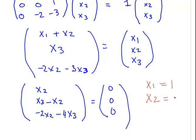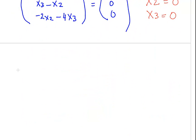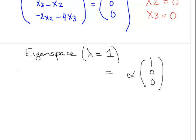x2, we actually can find a direct solution here. x2 is equal to 0, and x3 necessarily is equal to 0 as well. So finally, the eigenspace for lambda equals 1 is alpha 1, 0, 0.